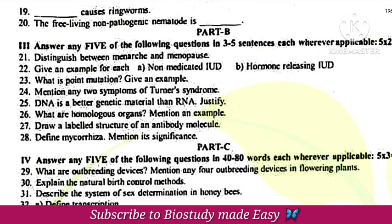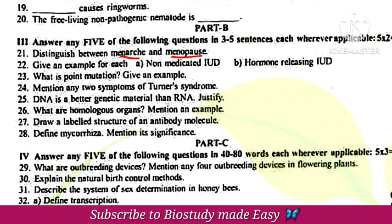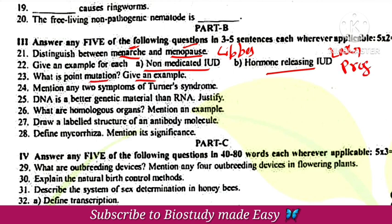Next, Part B questions. Menopause means the end of the menstrual cycle, whereas puberty is the first start of the menstrual cycle. Menopause occurs at around age 50. An example of a non-medicated IUD is the lippes loop. The hormone-releasing IUD contains LNG-20 and progesterone. Point mutation is also an important topic.